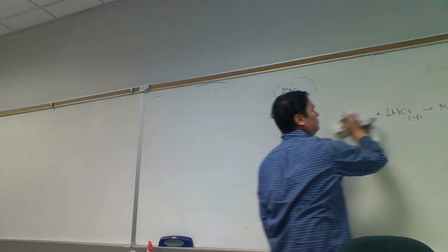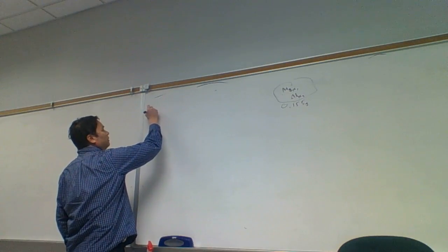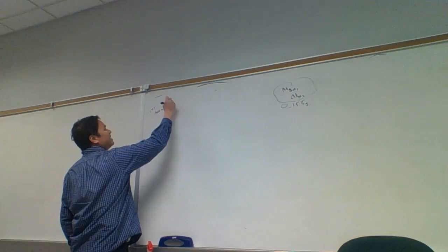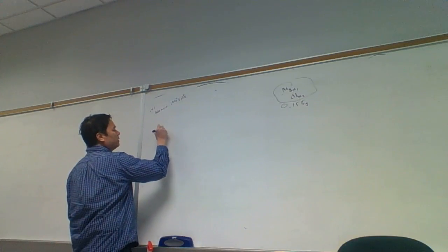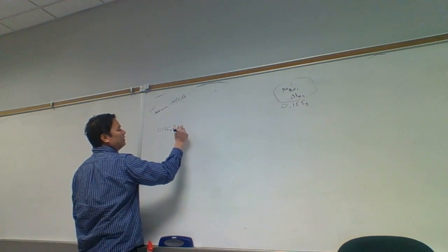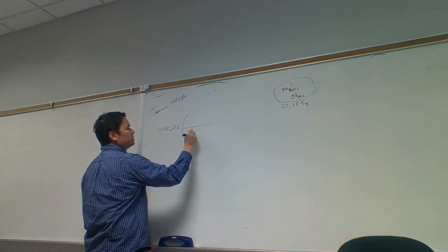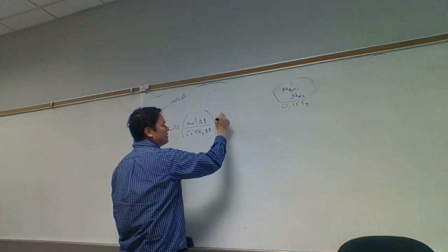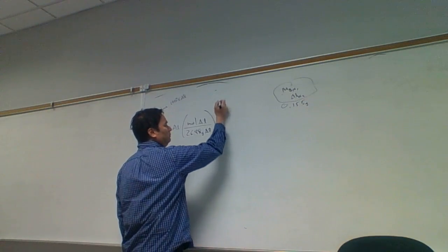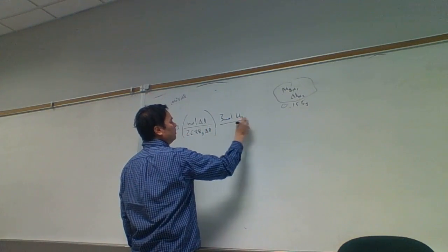First, assume 100% aluminum. We're going to get 0.155 grams of aluminum. Then we do a gram-to-mole conversion. I don't have the molar mass of aluminum memorized: 26.98 grams of aluminum per mole of aluminum. And then the ratio was three moles of hydrogen to two moles of aluminum.